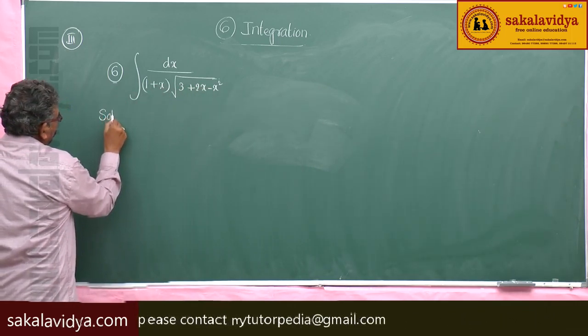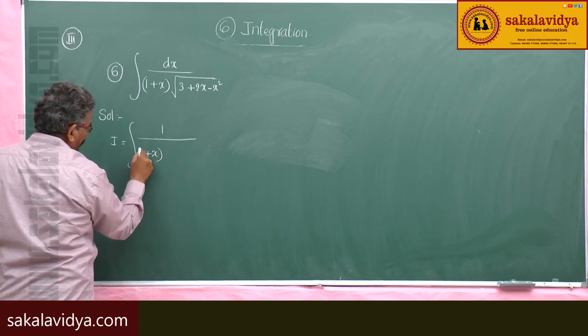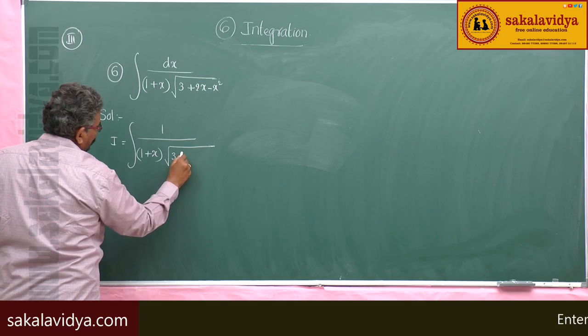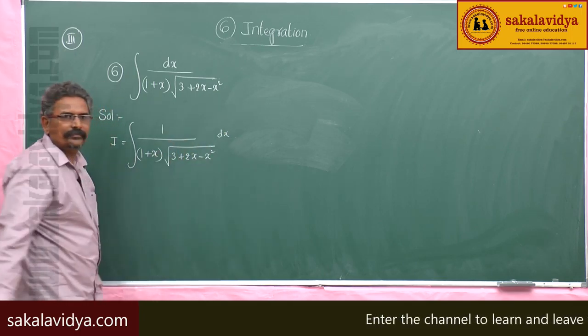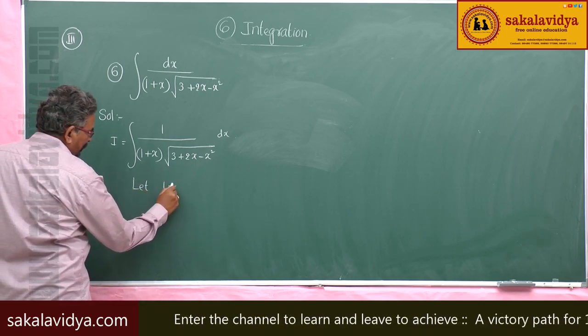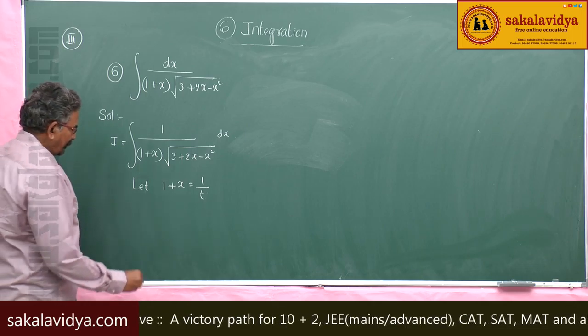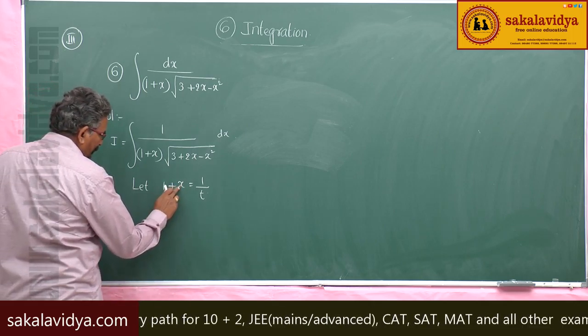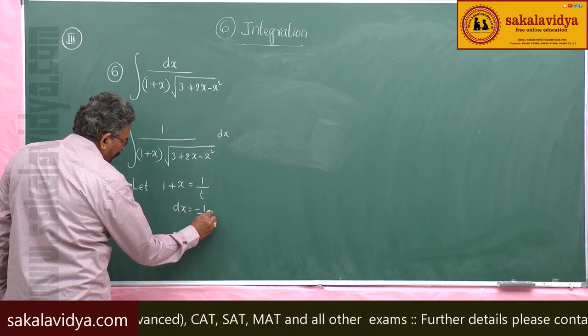I equals the integral of 1 by (1 plus x) times the square root of (3 plus 2x minus x squared) dx. Let 1 plus x equal 1 by t. Now differentiate both sides with respect to t: dx equals minus 1 by t squared dt.